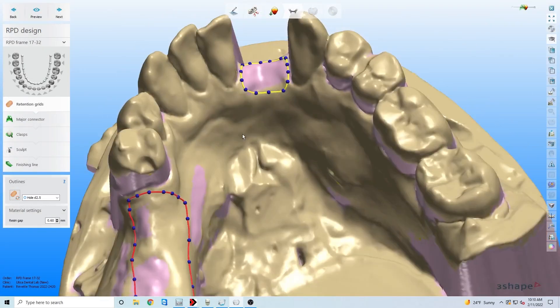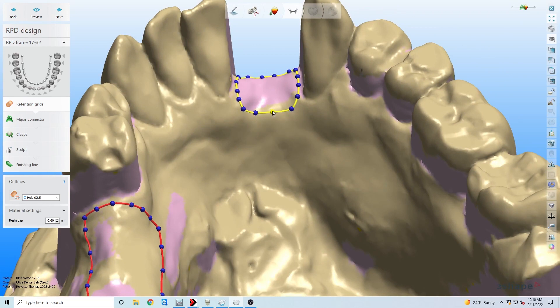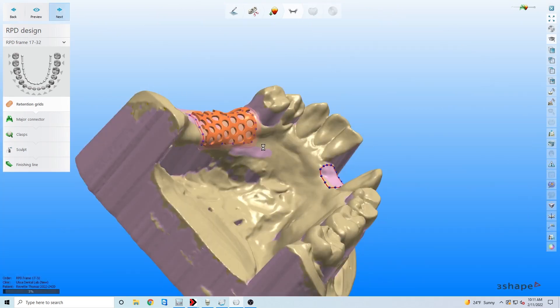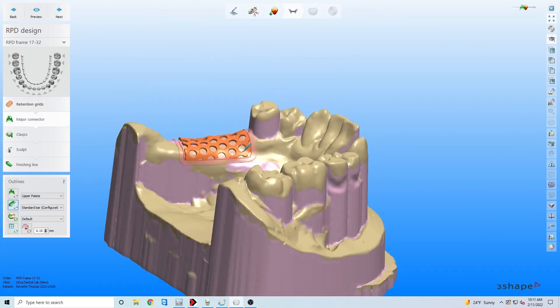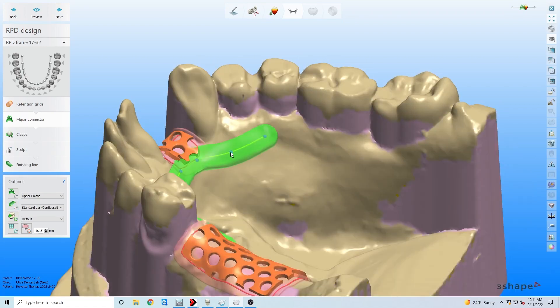Direct metal laser sintering - this additive 3D metal printing technique has completely superseded metal casting technology. Gone are the days of labor-intensive investing, casting, and finishing metal partial techniques. Now partial frames are CAD/CAM designed using a chromium cobalt metal alloy.